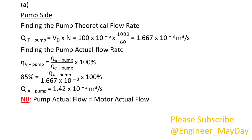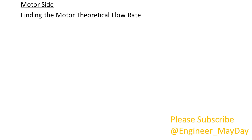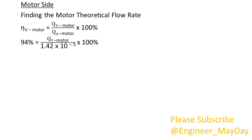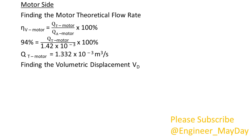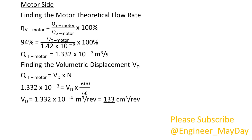Note that pump actual flow is equal to motor actual flow. Motor actual flow equals 1.42 times 10 to the power negative 3 cubic meters per second. Finding the motor theoretical flow rate, which equals 1.332 times 10 to the power negative 3 cubic meters per second. Finding the volumetric displacement VD: VD equals 133 cubic centimeters per revolution.